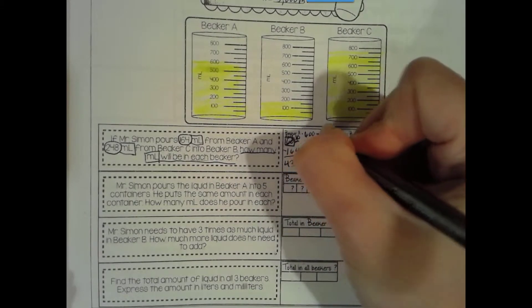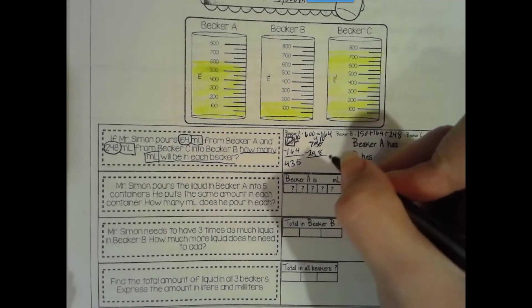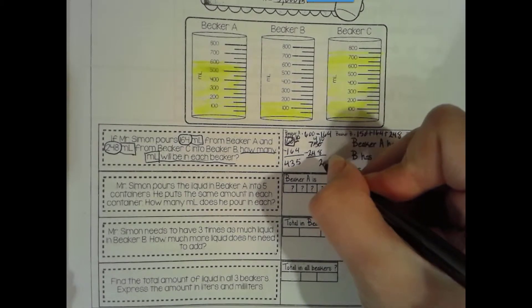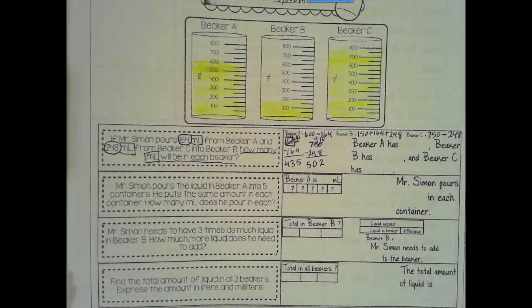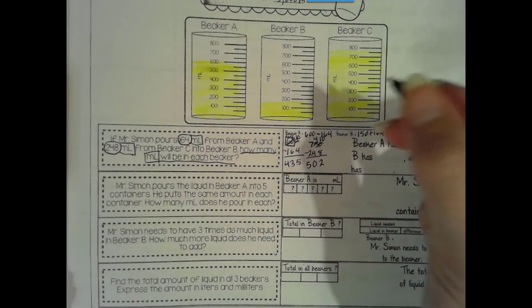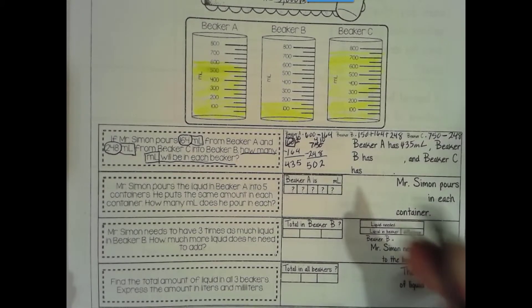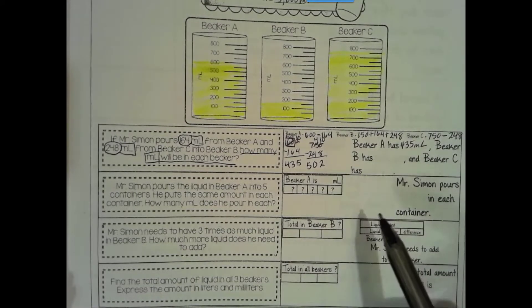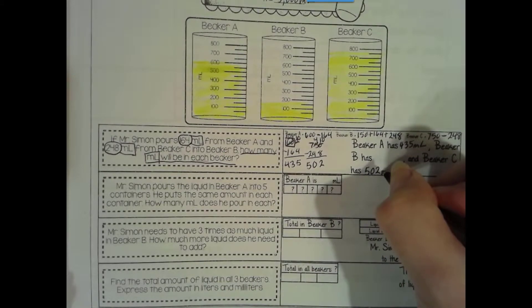Okay, we have some more practice problems here. So we're looking at these beakers. If Mr. Simon pours 164 milliliters from beaker A and 248 milliliters from beaker C into beaker B, how many milliliters will be in each beaker? Well, first, we have to figure out what each one is. So to find beaker A, it currently has 600. And we're going to take out 164. Beaker B currently has 150. And we're going to add to it 164. And we're going to add to it 248. And then beaker C has 750. And we're going to take out 248.